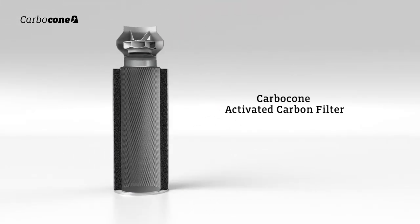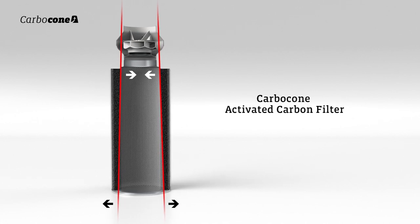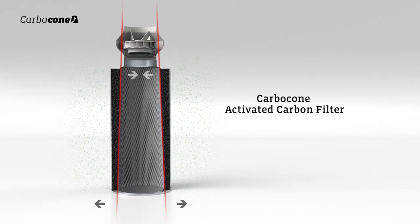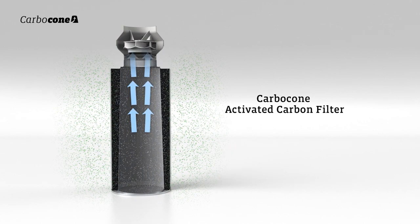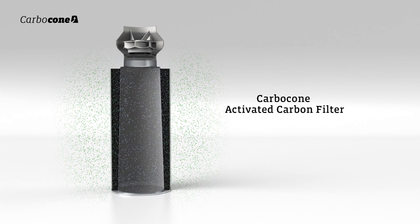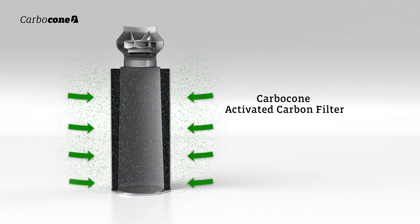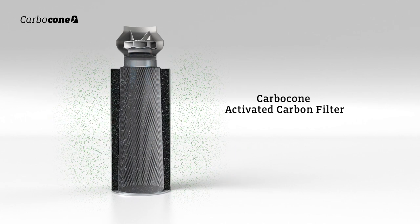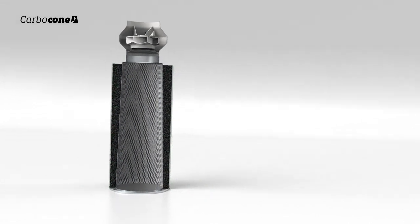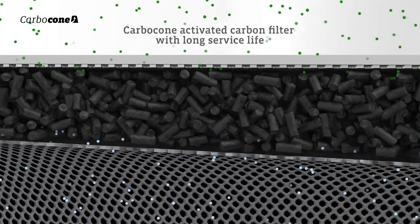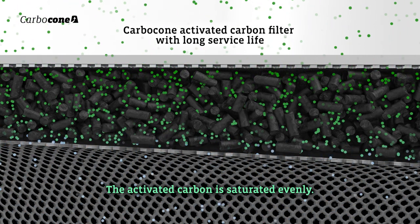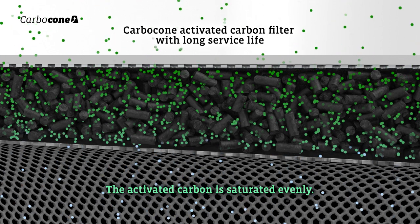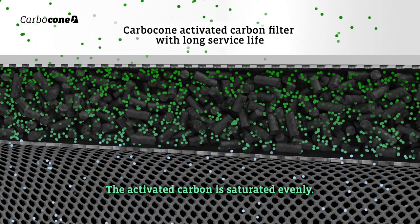The Prima Klima carbocone filters have a unique structure: the activated carbon bed tapers towards the bottom of the filter. The conical filter construction achieves a uniform airflow through the entire activated carbon bed. The activated carbon in the lower part of the filter is optimally flowed through with air and evenly saturated, increasing the absorption capacity of the filter.